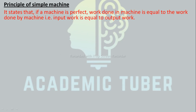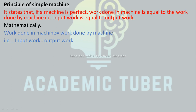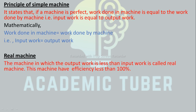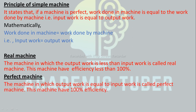Principle of simple machine: it is said that if a machine is perfect, the work done on the machine equals the work done by the machine — that is, input work equals output work. Real machine: a machine in which the output work is less than the input work is called a real machine. This machine has efficiency less than 100%. In practice and reality, no machine is perfect.